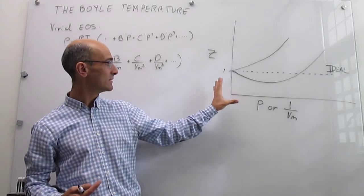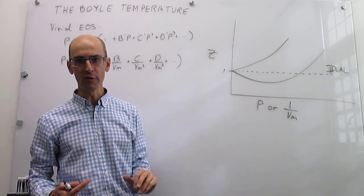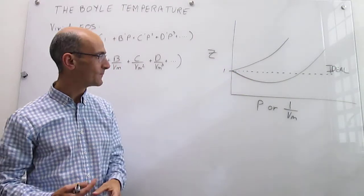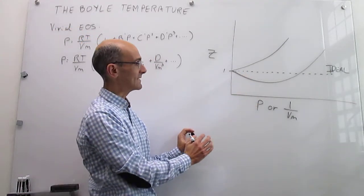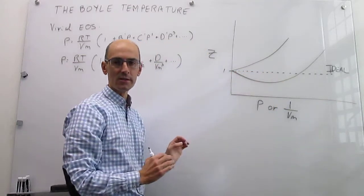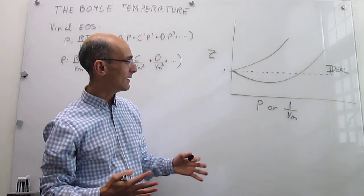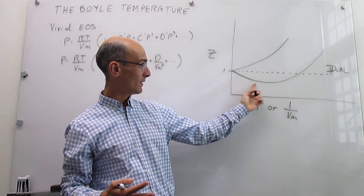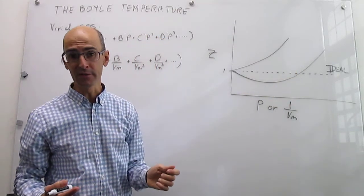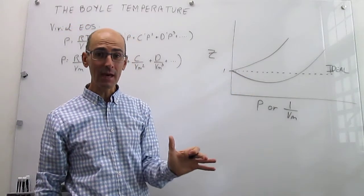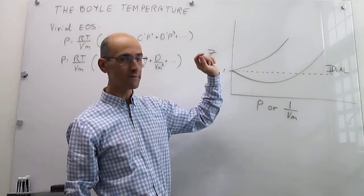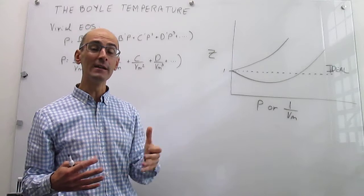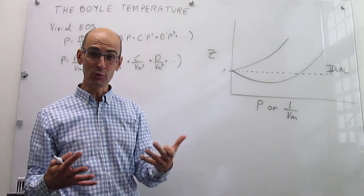To do that we are going to go again to the compression factor versus pressure or inverse molar volume diagram and recall how this behavior is connected to the interactions of a gas. Our baseline is always going to be the ideal case where the compression factor should be 1 regardless of the pressure. But under some circumstances, for example a gas at relatively low temperatures, we actually see that the compression factor initially is below 1 and then eventually turns over and becomes larger than 1.